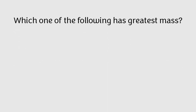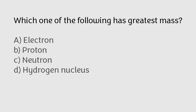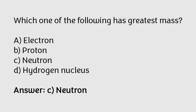Which one of the following has the greatest mass: electron, proton, neutron, or hydrogen nucleus? The correct answer is option C — neutron has the greatest mass.